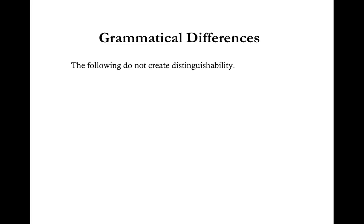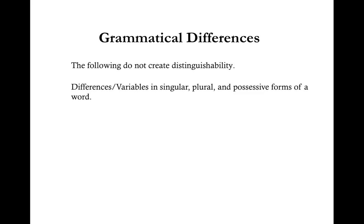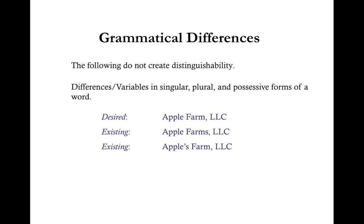Grammatical differences also do not create distinguishability. Differences in singular, plural, and possessive forms of a word are not sufficient. For example, if your desired LLC name is Apple Farm LLC, but during the search you found Apple Farms LLC or Apple's Farm LLC, both of those names are too similar and therefore your desired LLC name would not be available for use. An example of an alternative name would be Bob's Apple Orchard LLC.